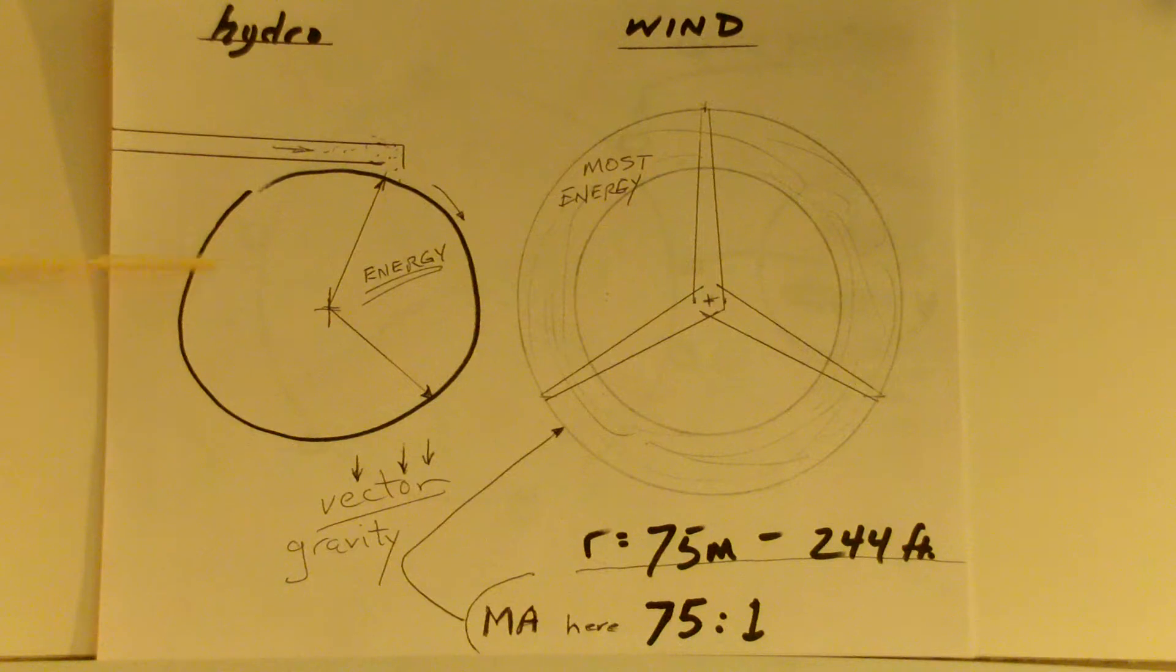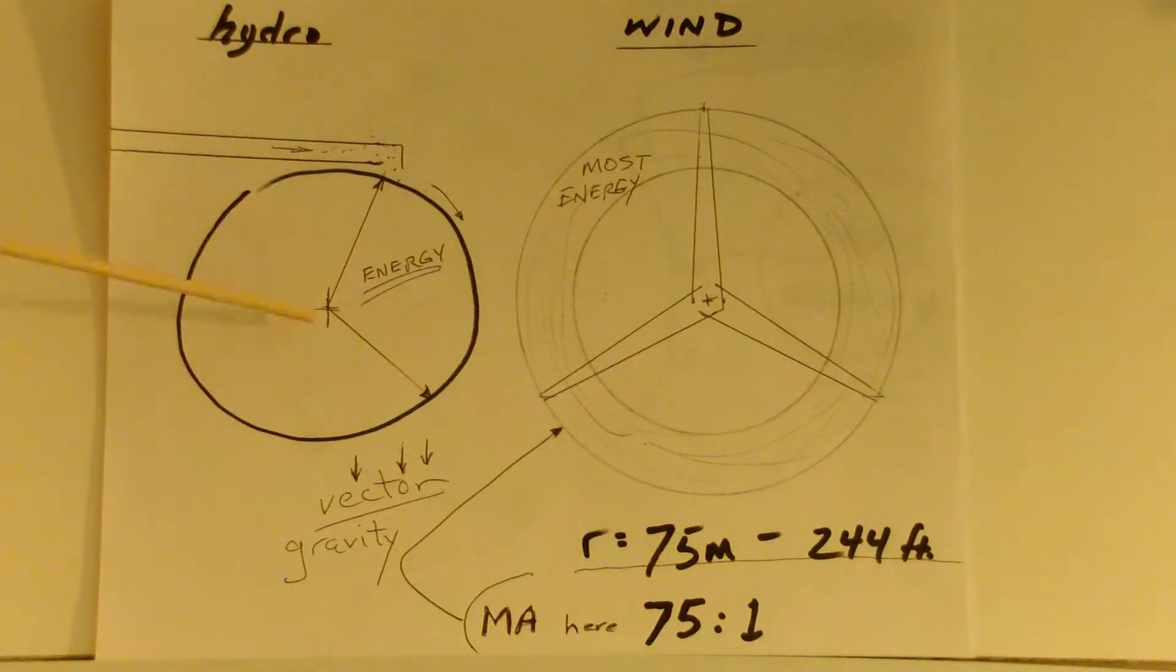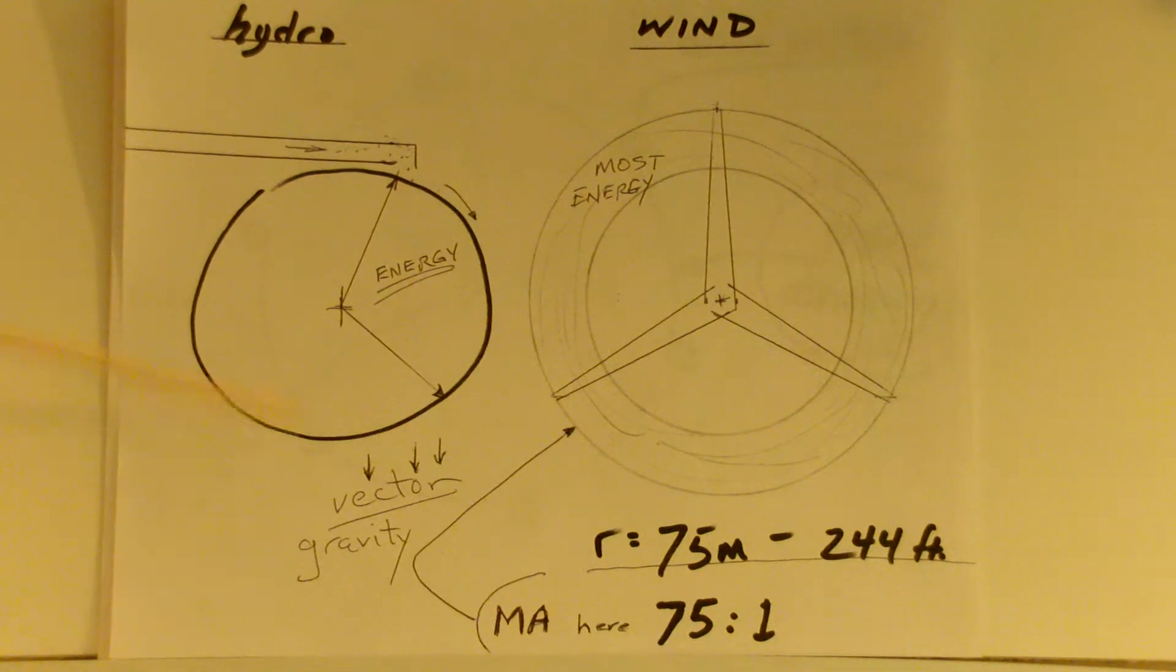These are applications where water wheels are used, where the conditions are suited to the use of that type of turbine. The flow rate is thus and such and the amount of head is limited to what's practical. Some have been made as tall as 14 meters in the past. The energy being captured is the vector of the direction of gravity, straight down.